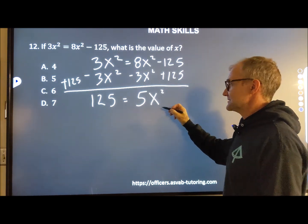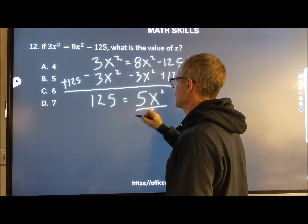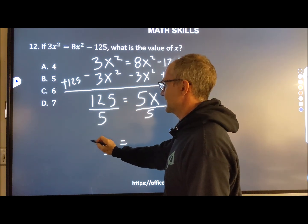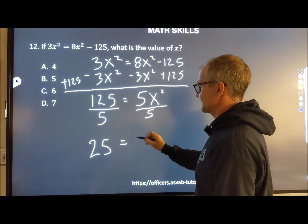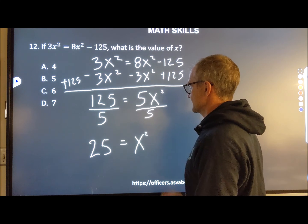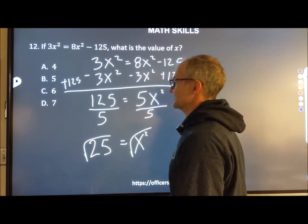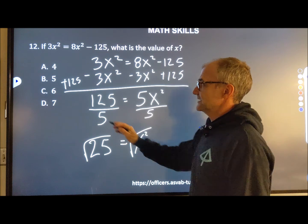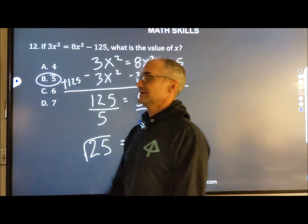Still isolating the variable x, I divide both sides by 5. 125 divided by 5 is 25. 25 is equal to x². Take square root of both sides, and x is equal to plus or minus 5. And there's my best answer right there, answer B.